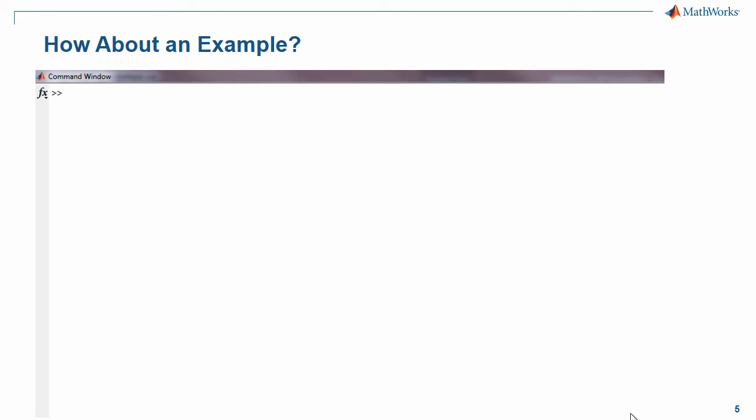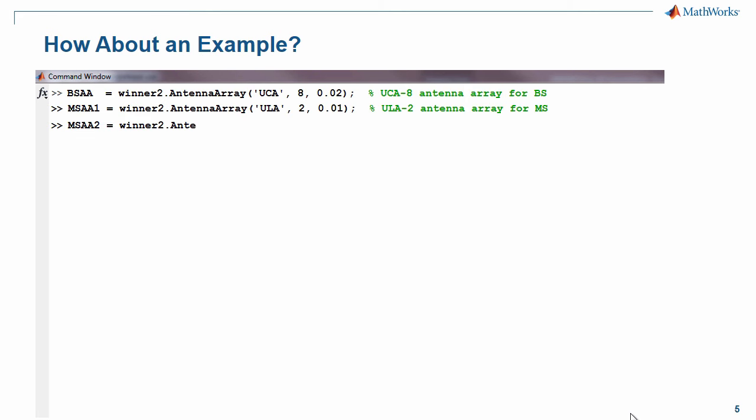So how about an example? Here's how you can create base station and mobile station antenna arrays. These are uniform circular and uniform linear arrays, which come pre-canned for you in the winner add-on software.